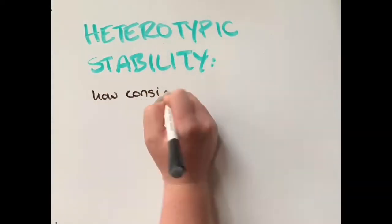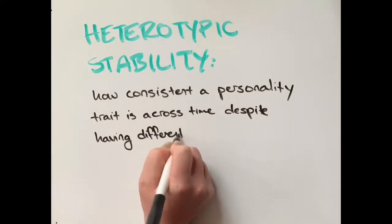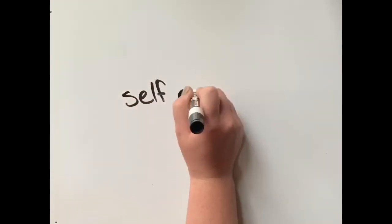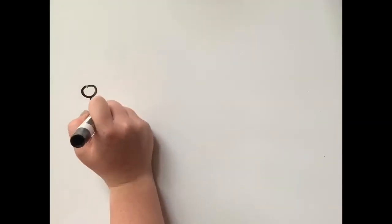Next, heterotypic stability is how consistent a personality trait is across time, despite having different ways of presenting itself. An example of heterotypic stability is measuring how a lack of self-control is expressed across development.